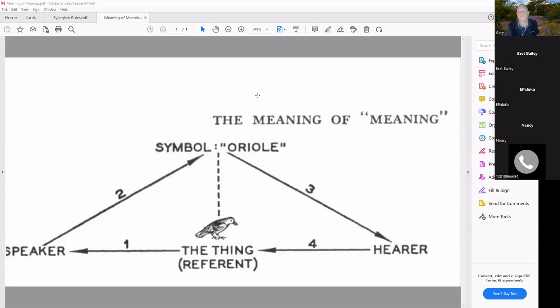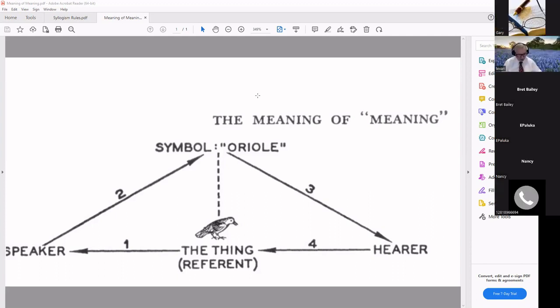So the fact of the matter is that language, the language we're using right now, is just arbitrary. You know, how we arrived at it, we came from different. A lot of our words came from Greek words, but where did those Greek words come from? So language evolved.